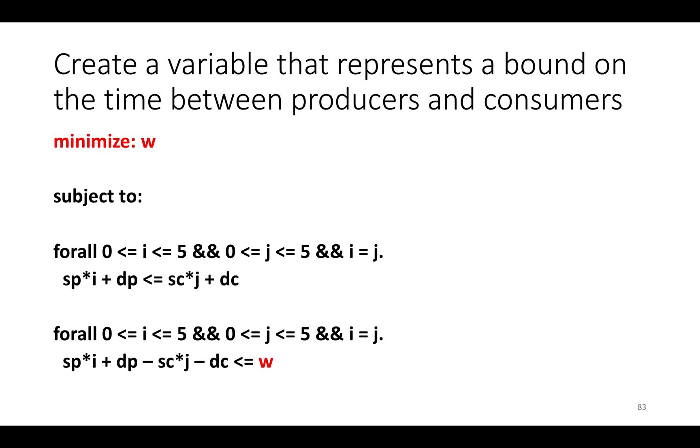Here's one way to do it: we're going to create a fresh variable that represents a bound on the time between producer and consumer executions. We're going to add this extra constraint, and it's going to be almost of the same form as our dependence constraint. We have our constraint which says all the data dependencies have to be respected, which means the time at which i is produced must be less than or equal to the time when j is produced if statement i sends data to statement j.